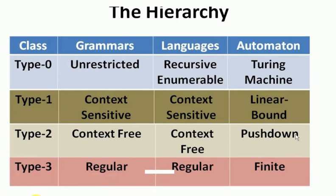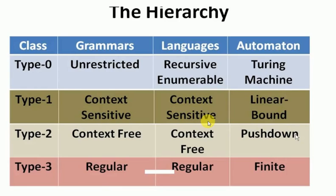These are the four classes, and corresponding to these classes we have some language, grammar, and automata. Starting from type 3: type 3 is the class which has regular grammar, regular languages, and finite automata. Then we have type 2 with context-free grammar, context-free language, and pushdown automata. Then type 1, which is context-sensitive language and linear bounded automata. Then type 0, which has unrestricted grammars, recursive enumerable languages, and Turing machine automata.